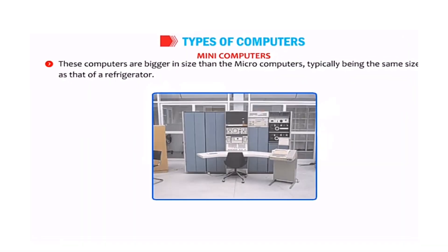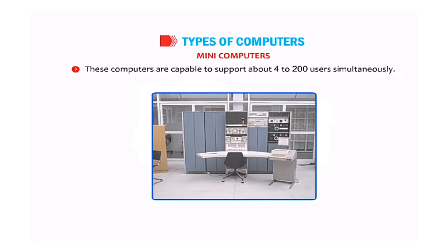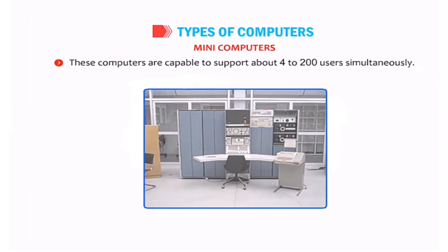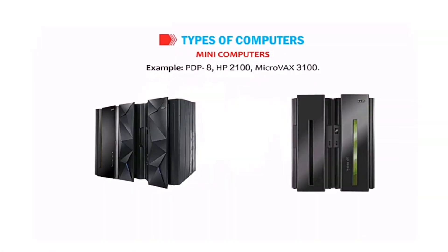Minicomputers are bigger in size than microcomputers and are almost the same size as a refrigerator. They have a higher processing speed but are costlier than microcomputers. Minicomputers can support about 4 to 200 users simultaneously and are used in banks, universities, and other large organizations. Some examples are PDP-8, HP 2100, and MicroVAX 3100.